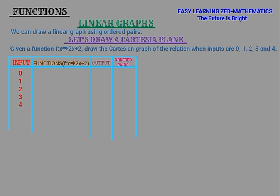We are going to replace each input where there is x in the function. So for the function 2x plus 2, putting in 0 gives us 2 times 0, which is 0, plus 2 equals 2. So 2 is the output when the domain is 0, and the ordered pair is (0, 2).